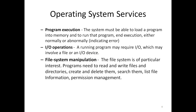Next we look at the different services provided by the operating system. The first service is program execution. Programs are available in memory, and whenever we want to execute a program it must be loaded from secondary memory into main memory and then run. The system must be able to load a program into memory and run it, ending execution either normally or abnormally — for example, in case of any error or interrupt, it may be terminated abnormally.